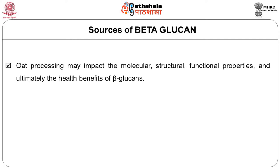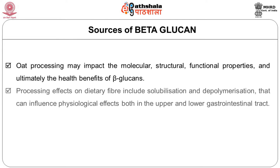When talking about beta-glucan, we must consider what happens during processing. We usually consume foods either by boiling, steaming or by flaking of oats, and we need to understand the fate of beta-glucan — its chemical structure or its degree of polymerization. In general, processing effects on dietary fiber include solubilization and depolymerization, which can influence physiological effects both in the upper and lower gastrointestinal tract.